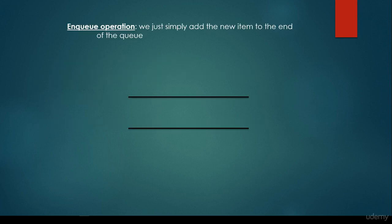So let's see how it works in practice. We have the enqueue operation, we just simply add the new item to the end of the queue. It is a very simple operation, it can be done in order 1, so constant time complexity.